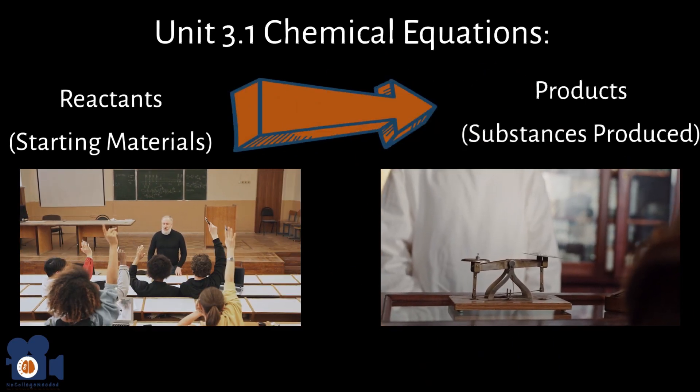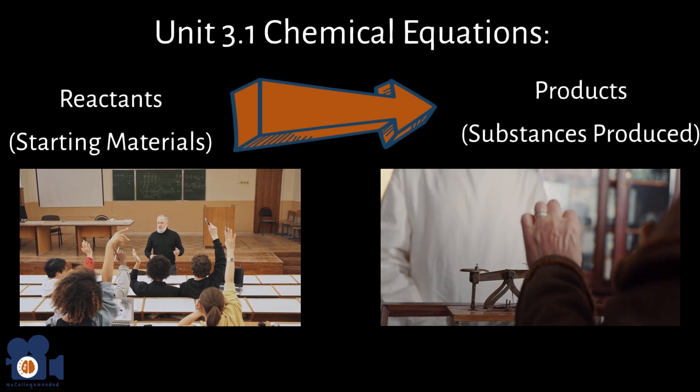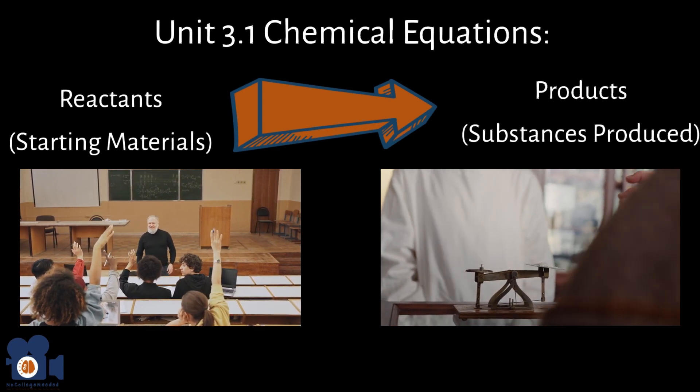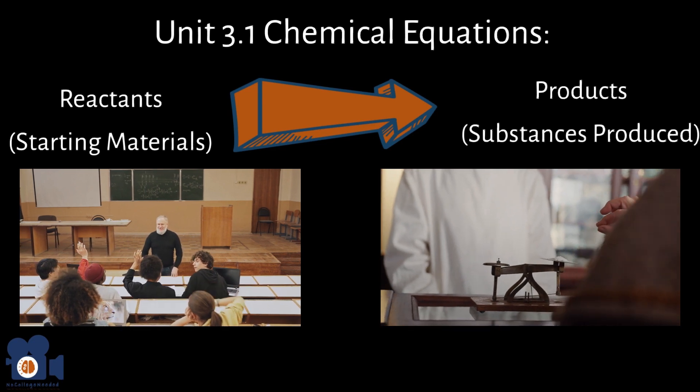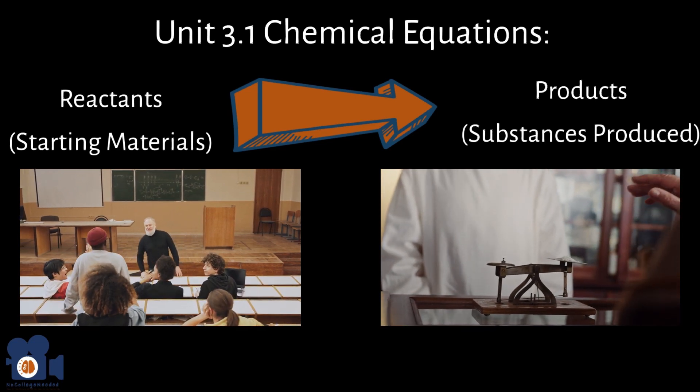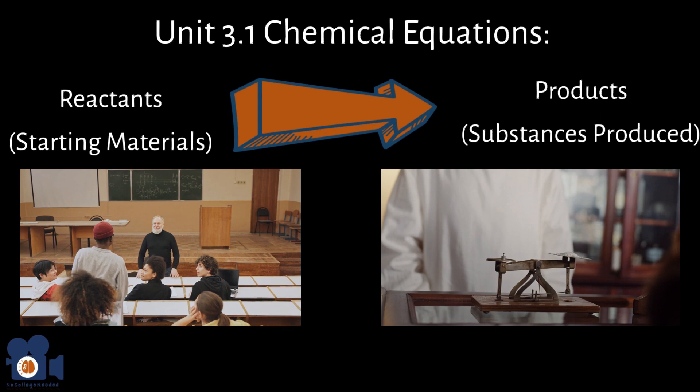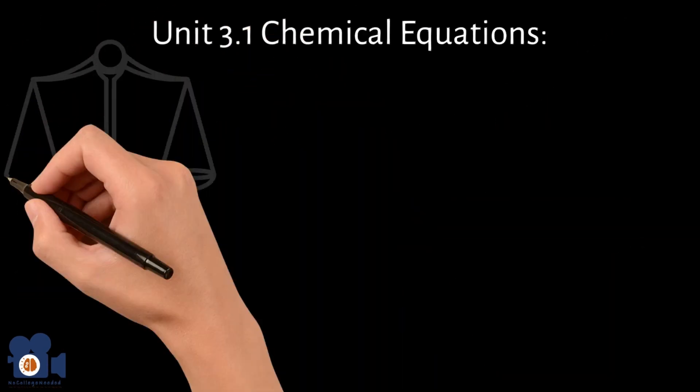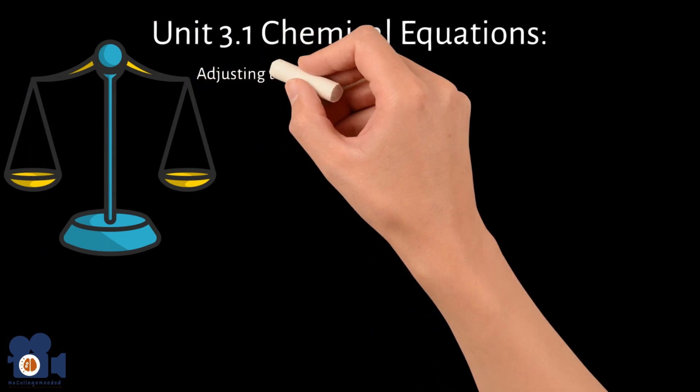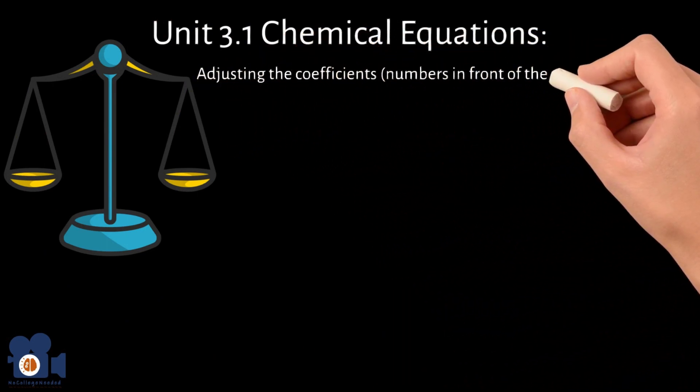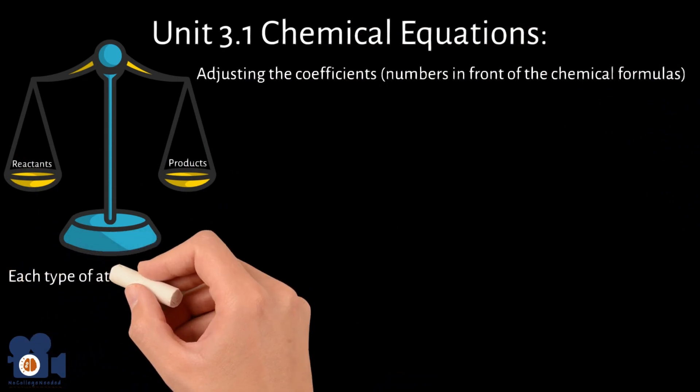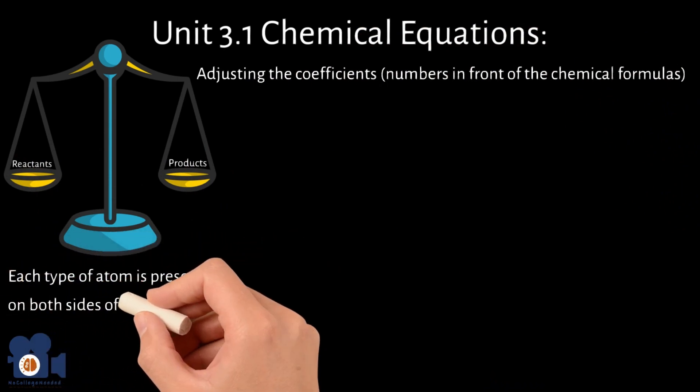Balancing chemical equations is a key factor of being a chemist because it allows us to accurately calculate the amount of reactants and products needed for a reaction and to predict how much of a product will be formed given a certain amount of reactant. Balancing a chemical equation in chemistry involves adjusting the coefficients, the numbers in front of the chemical formulas, of the reactants and products so that the same number of each type of atom is present on both sides of the equation.